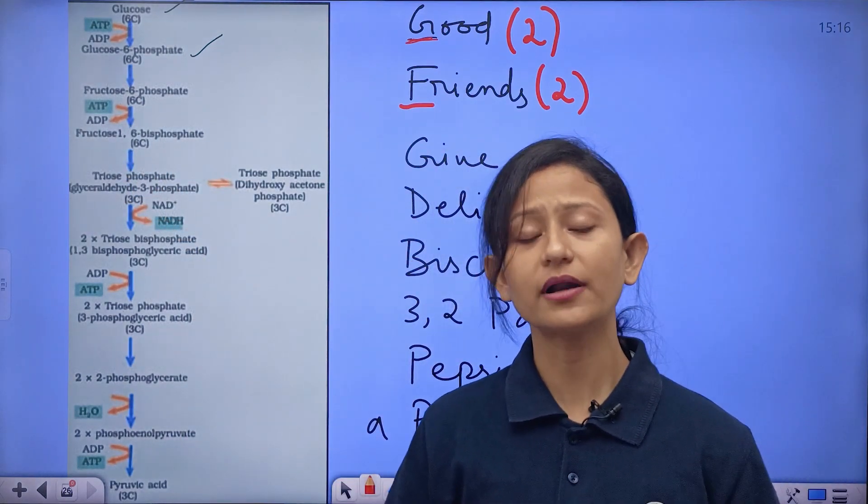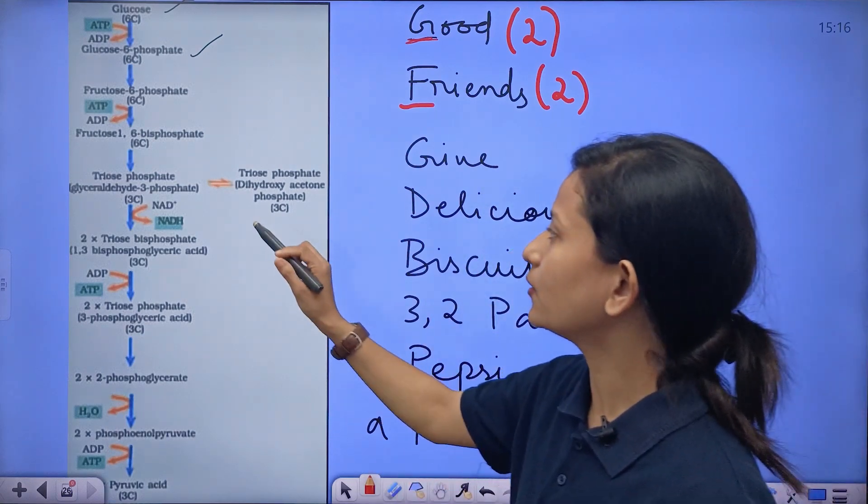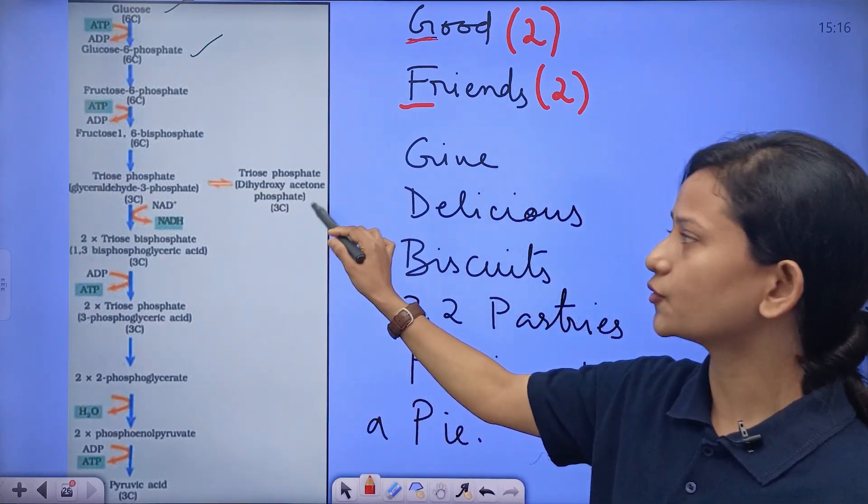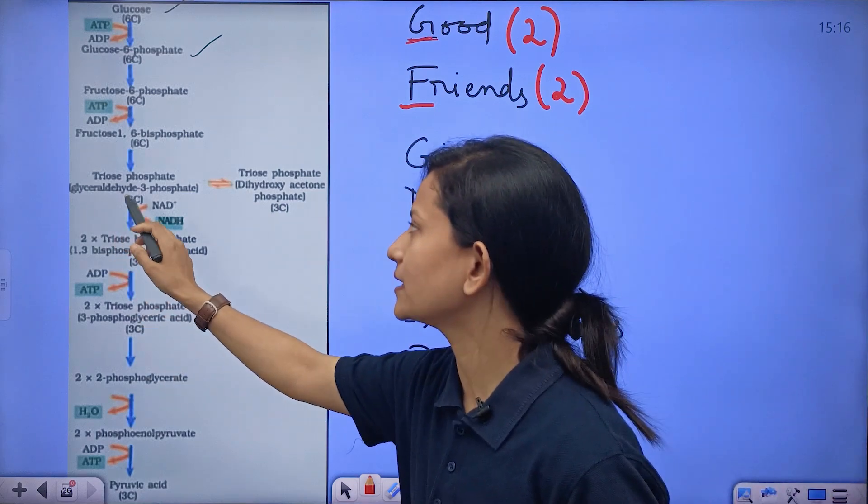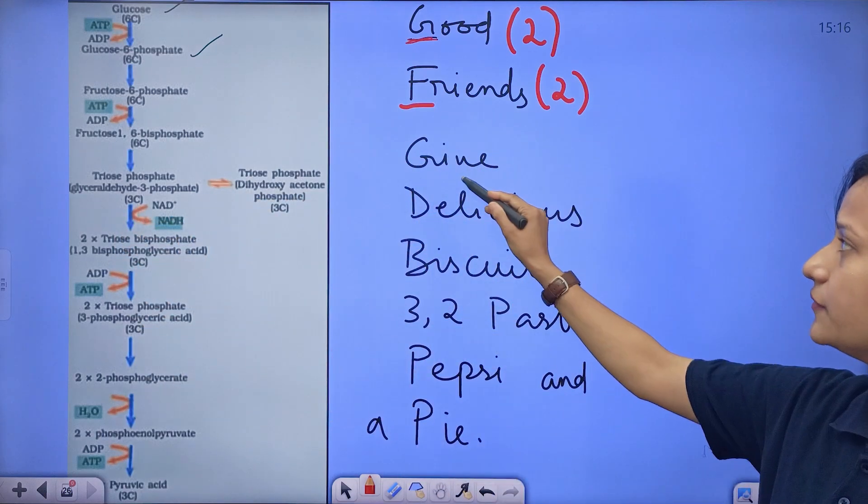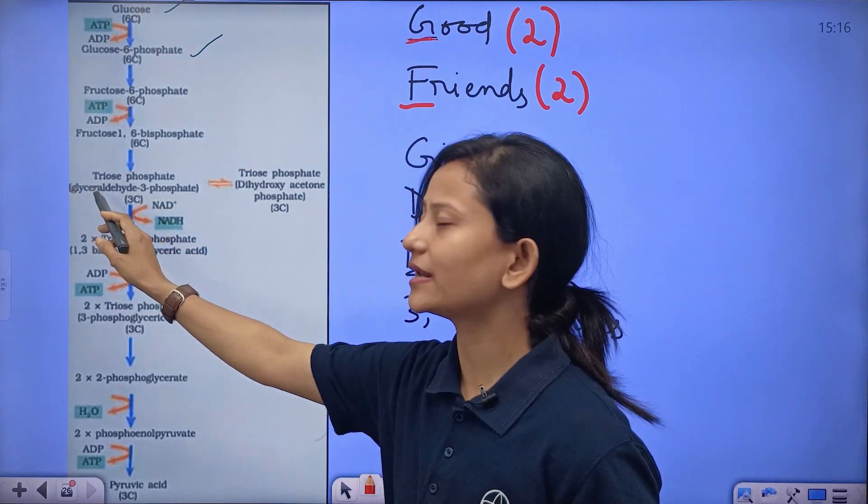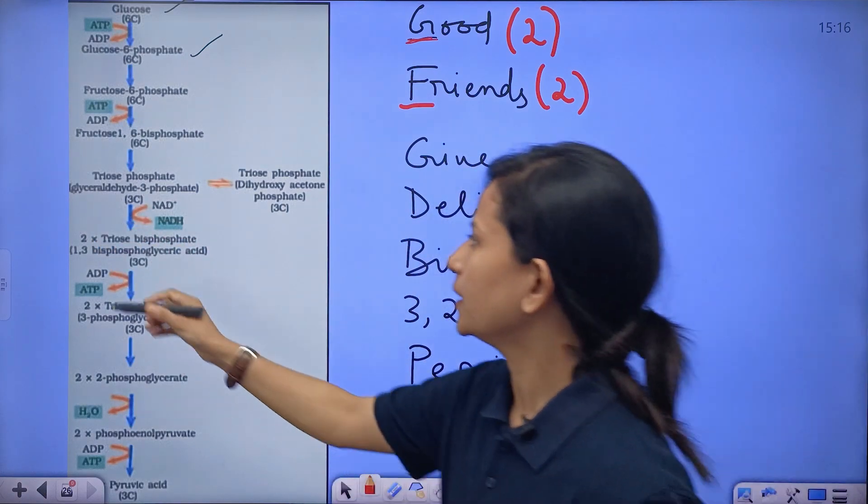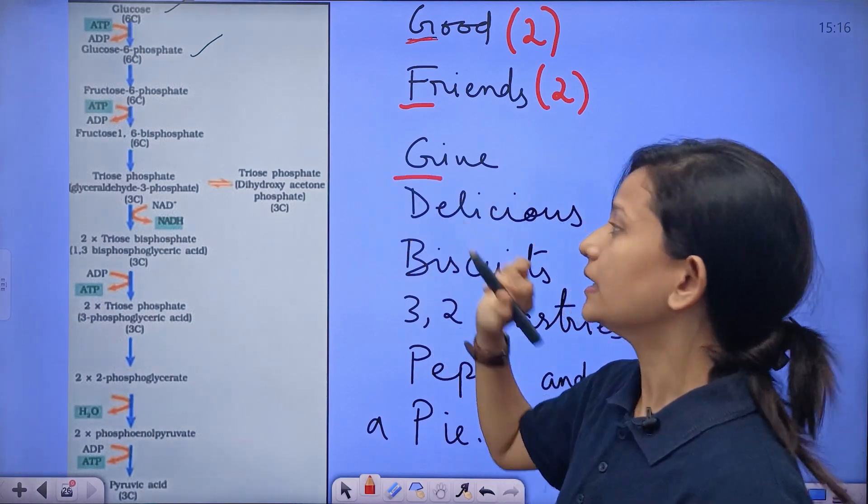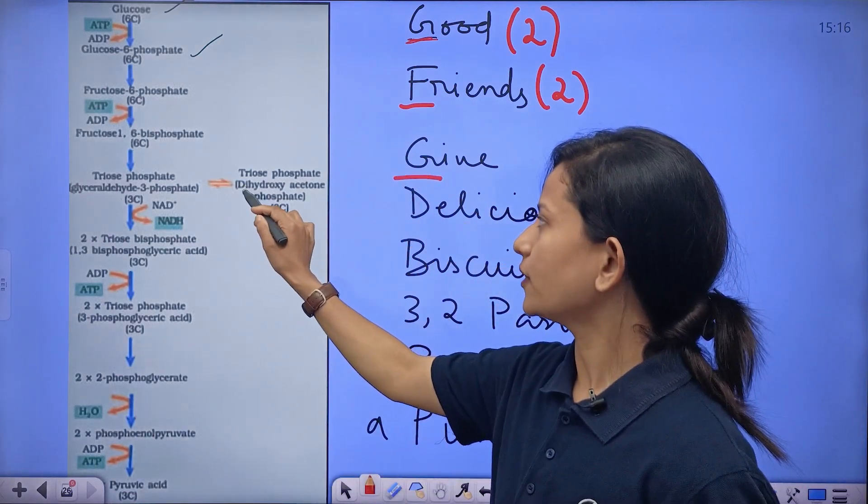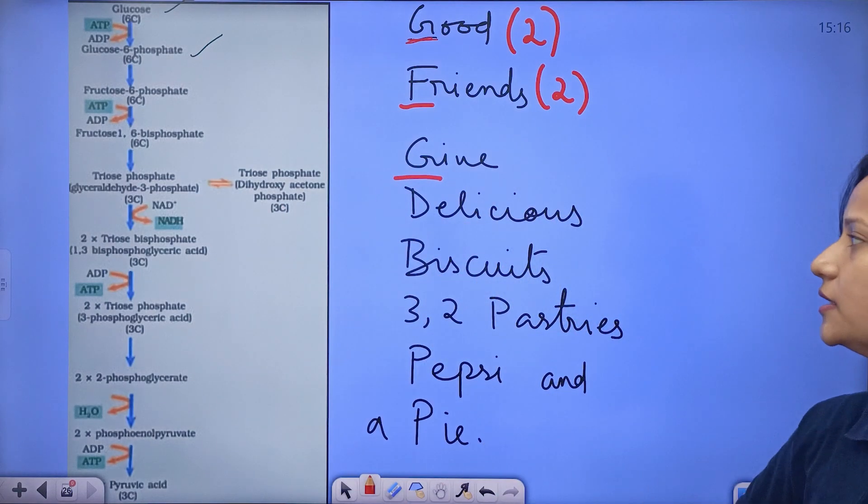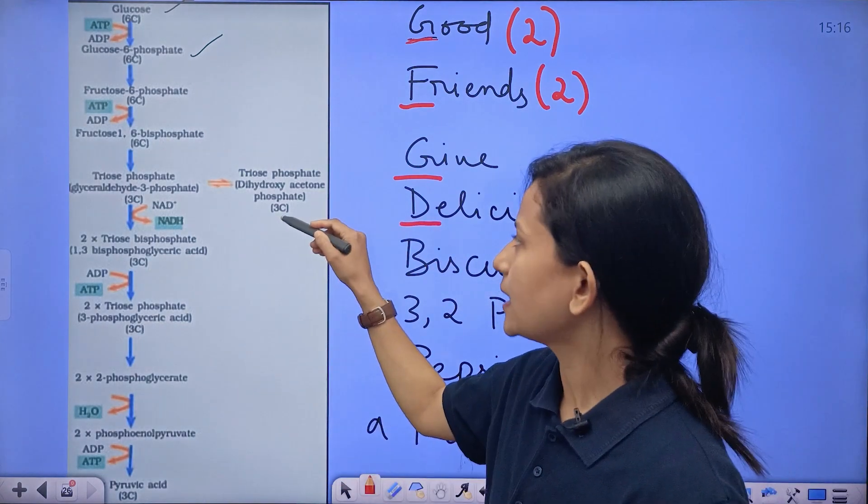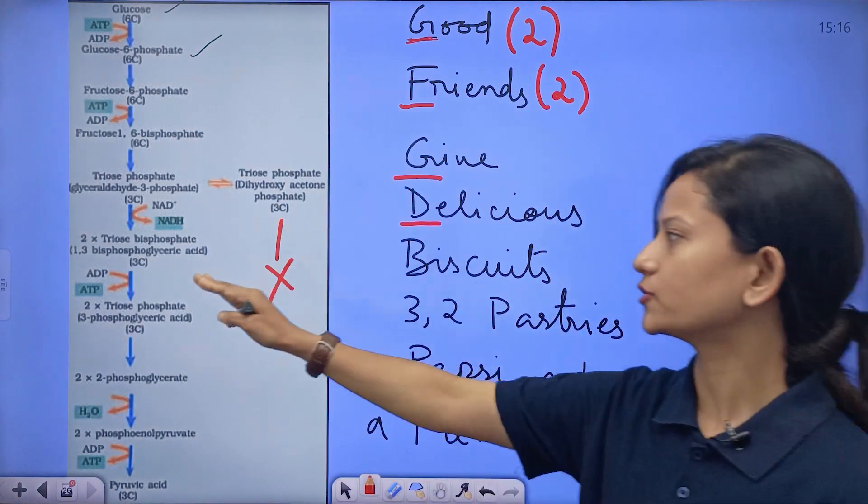These two reversible products are dihydroxyacetone phosphate and glyceraldehyde 3-phosphate. Give stands for glyceraldehyde 3-phosphate. G for glyceraldehyde 3-phosphate, G for give. The two products are: D for dihydroxyacetone phosphate, D for delicious.